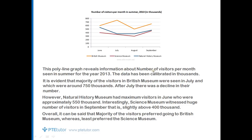The complete structure of the image could be something like this: 'This polyline graph reveals information about the number of visitors per month seen in summer for the year 2013. The data has been calibrated in thousands. It is evident that the majority of the visitors in British Museum were seen in July, which were around 750 thousand. After July there was a decline in their number. However, Natural History Museum had maximum visitors in June, who were approximately 550 thousand. Interestingly, Science Museum witnessed a huge number of visitors in September, that is slightly above 400 thousand. Overall, it can be said that the majority of the visitors preferred going to British Museum, whereas the least preferred the Science Museum.'